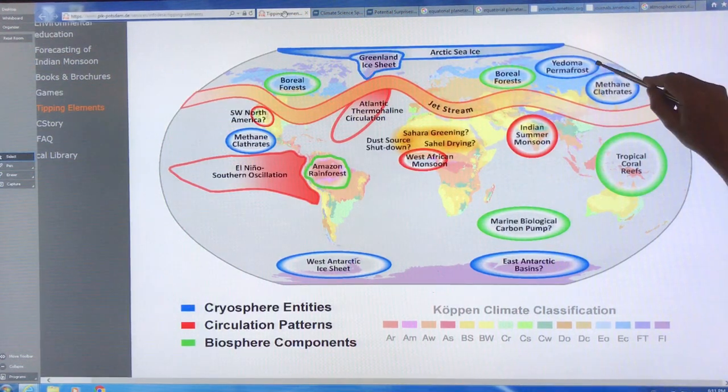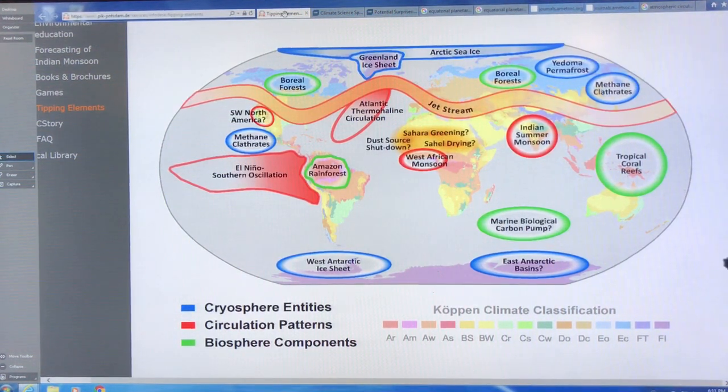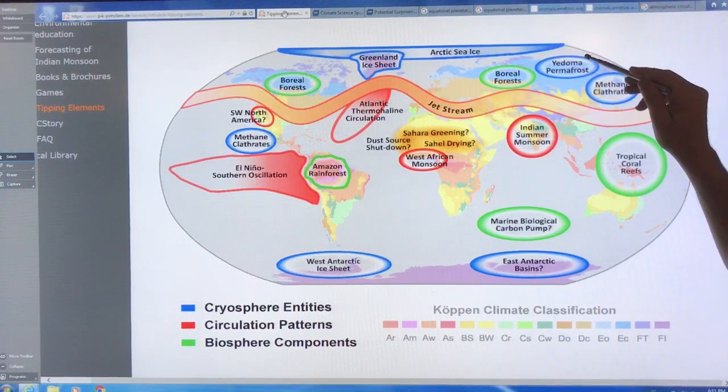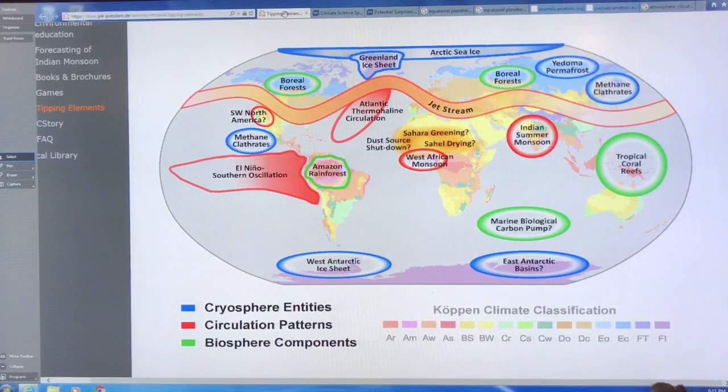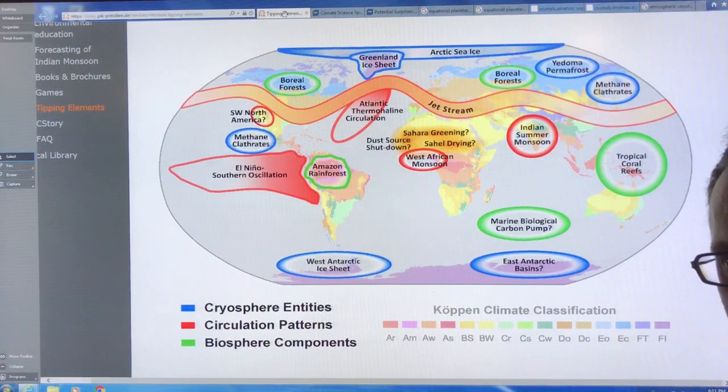The Yedoma permafrost, the permafrost on land. Yedoma, this is particularly in Siberia, there's also in northern Canada, in other regions, Alaska, there's a lot of methane, there's a lot of organic material tied up in that permafrost. So when that thaws, bacteria breaks it down.